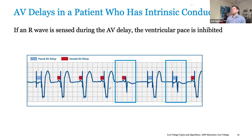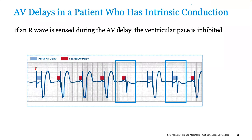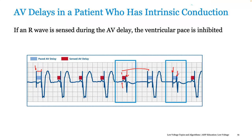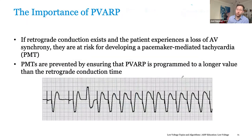If an R wave is sensed: we have a paced atrial event that sets the paced AV delay, ventricular event paces, and so on. If we have a sensed atrial event, it sets the sensed AV delay. But because an intrinsic ventricular event comes across before this timer runs out, it withholds the pace and resets the timing cycle. Same thing occurs here, and then again — an atrial pace, a sensed ventricular event comes across, which resets the timer and withholds the pace. The device is basically responding appropriately.